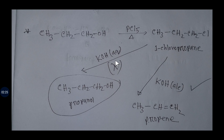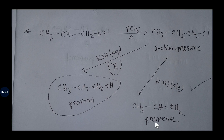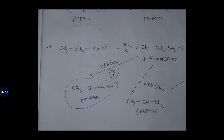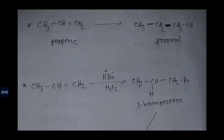If you add aqueous potassium hydroxide instead, you will get propanol — your starting compound — which is not acceptable. So: add phosphorous pentachloride to propanol to get 1-chloropropane, then add alcoholic potassium hydroxide to get propene. This is how you convert propanol to propene.